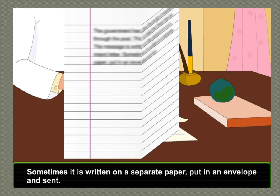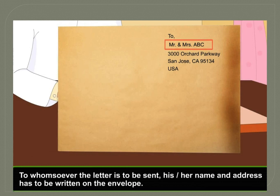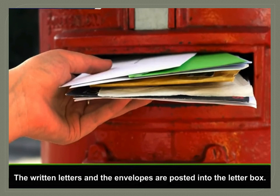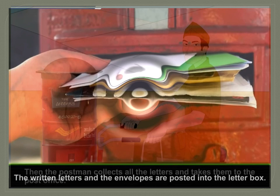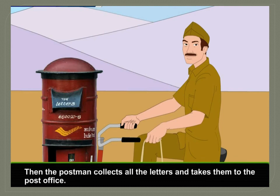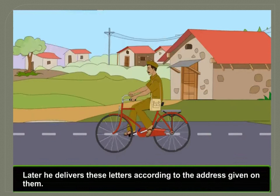Sometimes it is written on a separate paper, put in an envelope and sent. To whomsoever the letter is to be sent, his or her name and address has to be written on the envelope. The written letters and envelopes are posted into the letter box. Then the postman collects all the letters and takes them to the post office. Then the letters are taken to the head post office, and later the postman delivers the letters according to the address given on them.